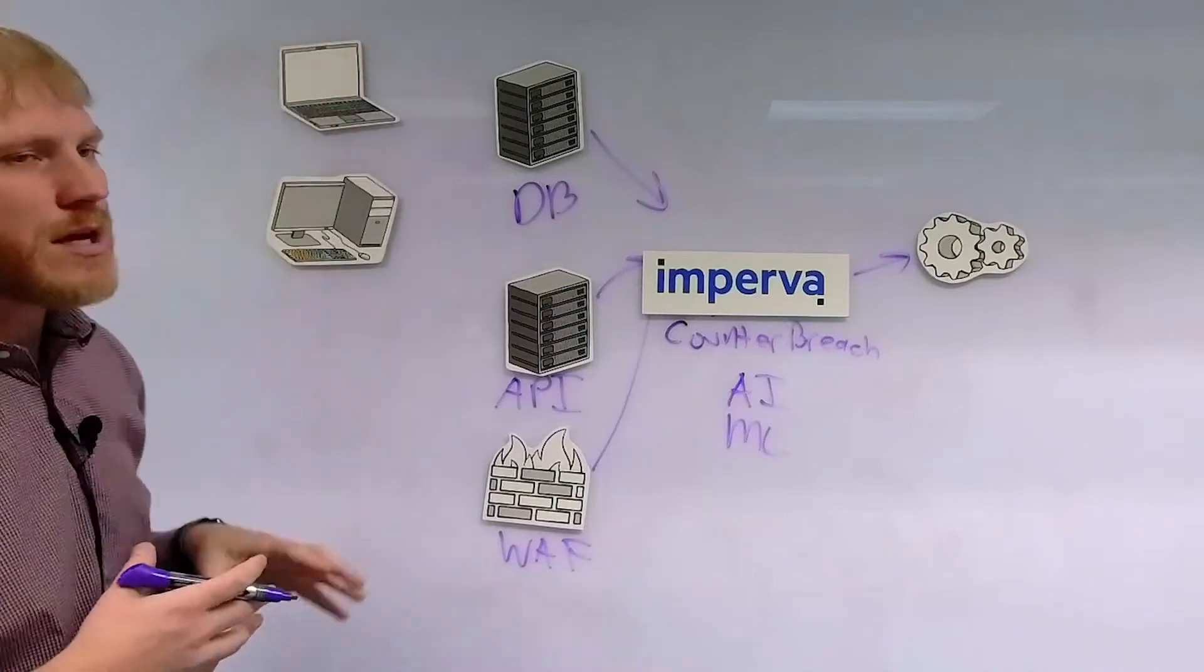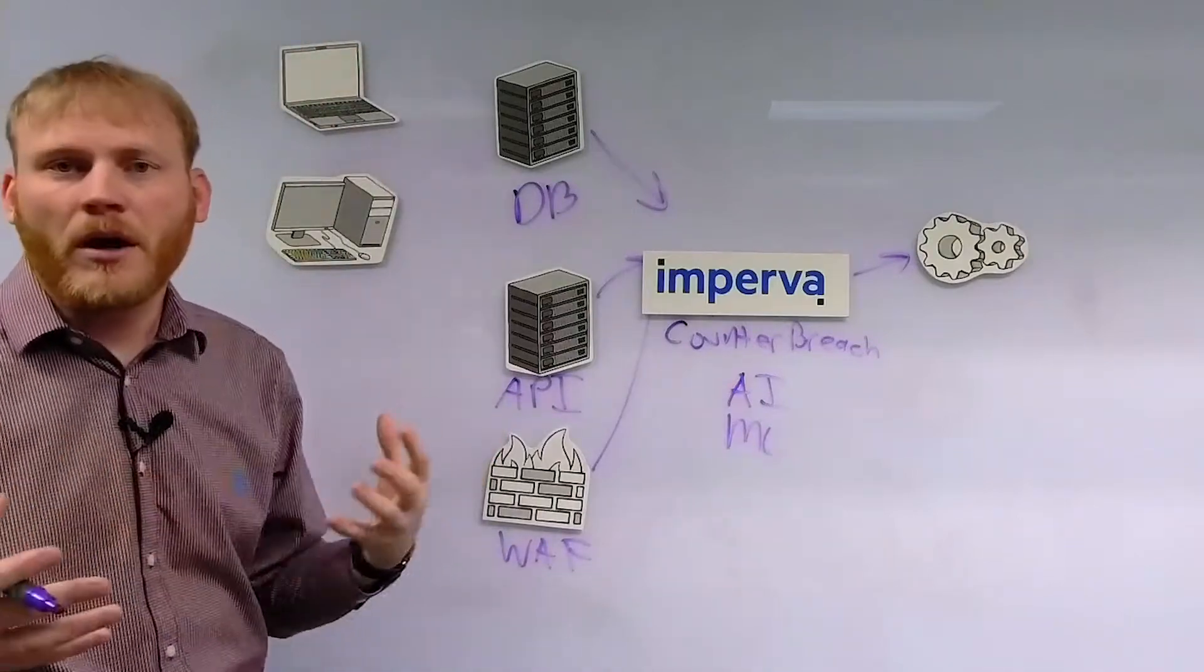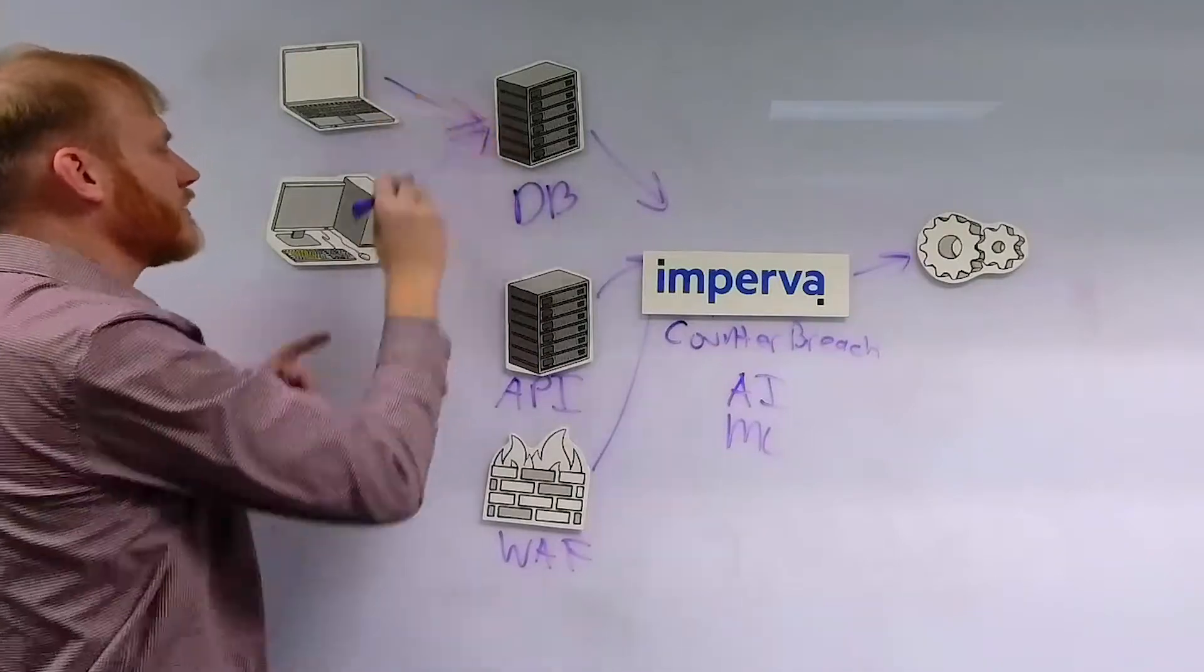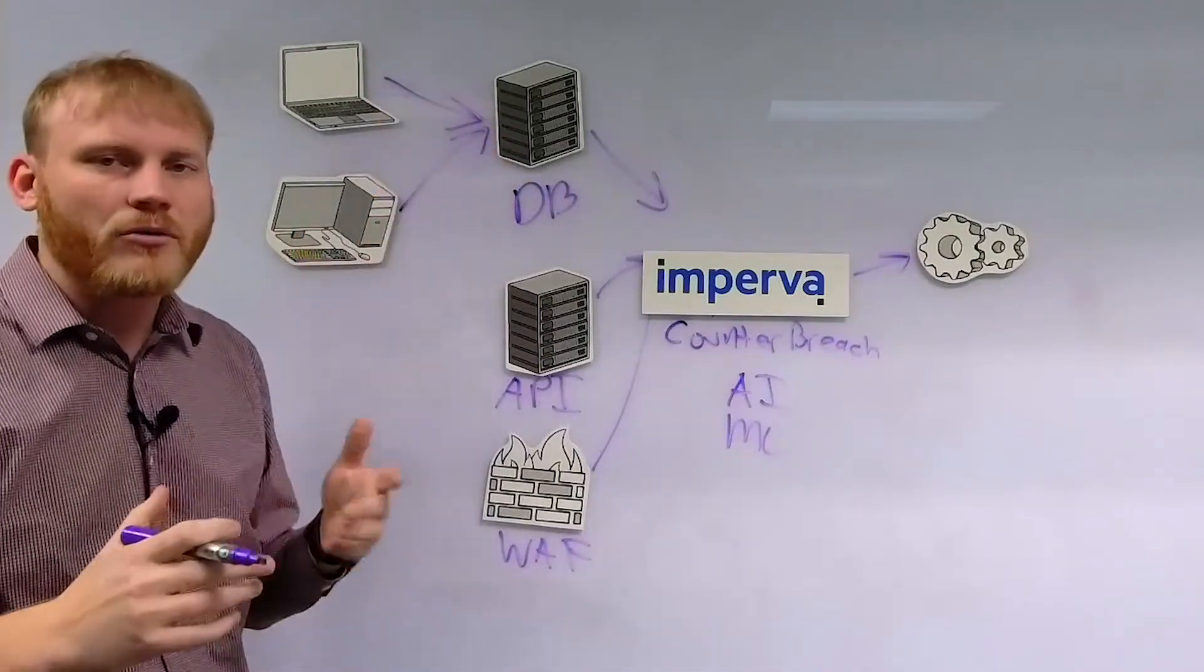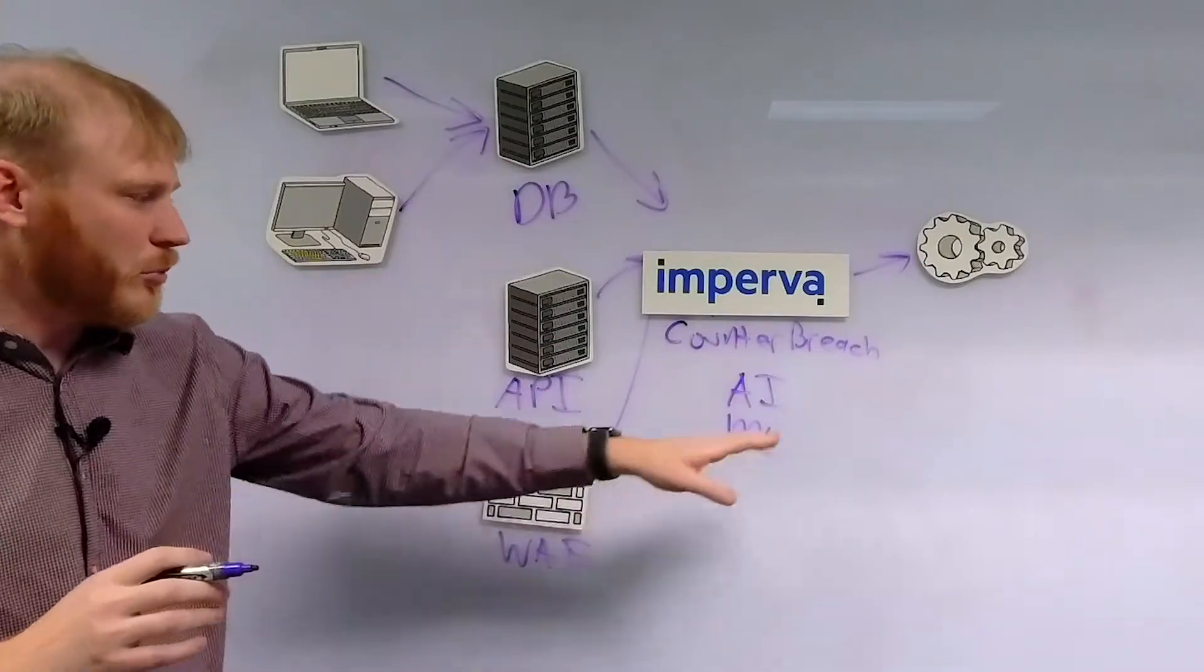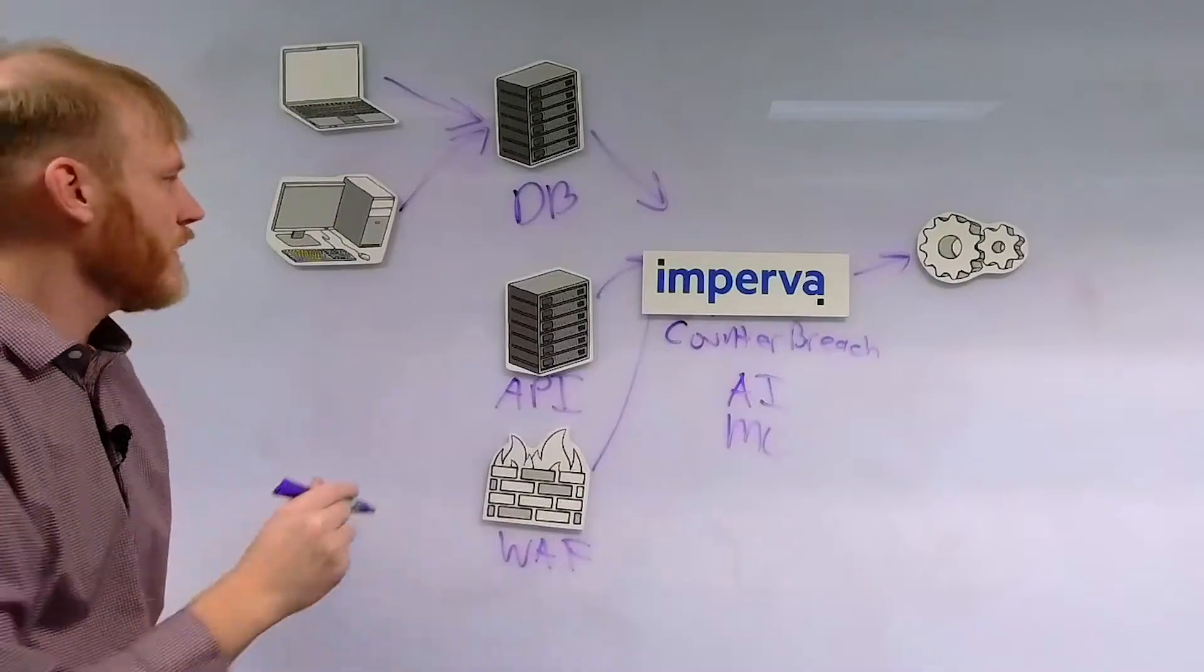So for example, here I have a teller that maybe on average accesses a hundred or a couple hundred accounts per day. Why did this user suddenly access a million records or a hundred thousand records? That doesn't seem normal. That's outside of the peer group, and we can use our machine learning to understand that.